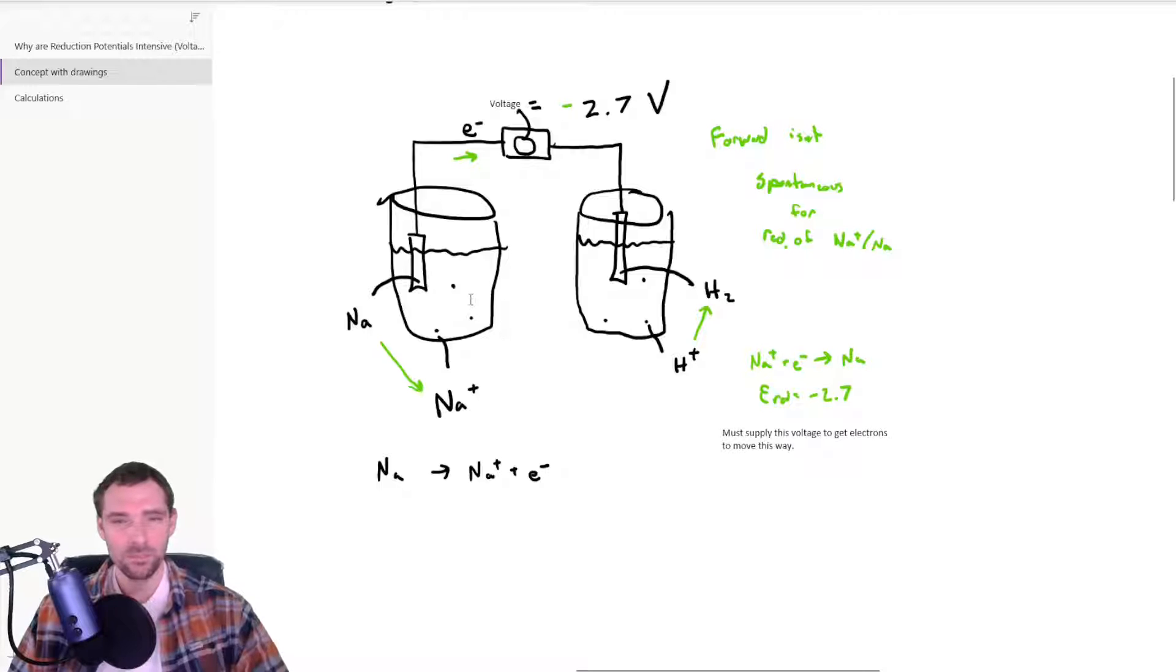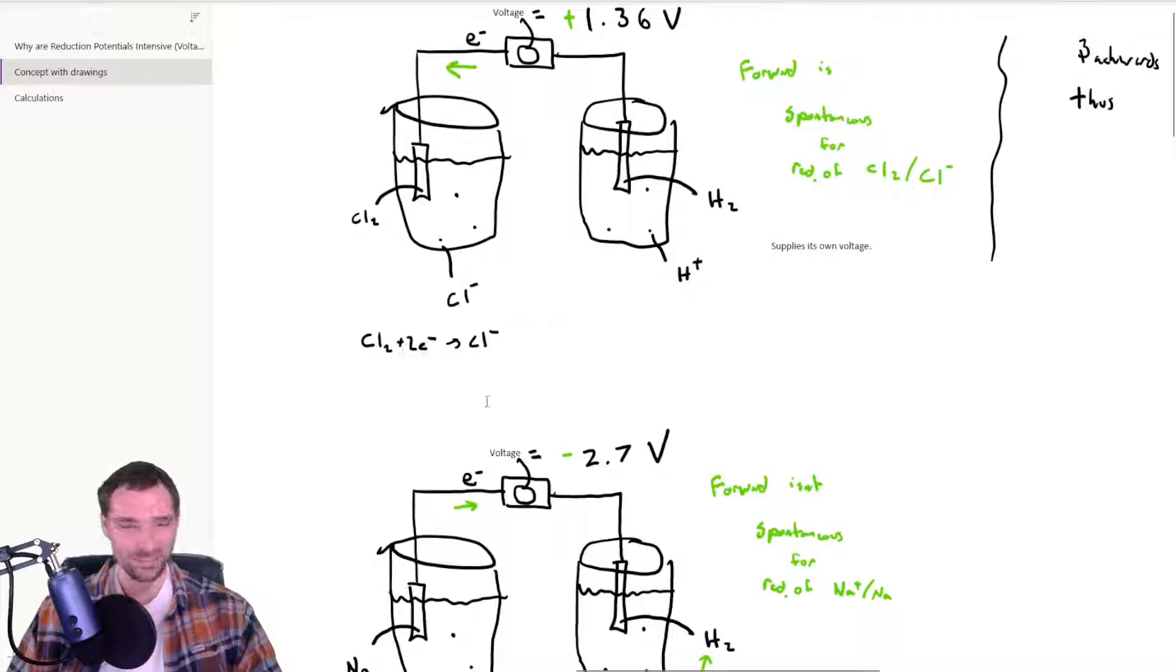But one thing to keep a note is that if you were to change the number, the concentration of these ions in here, it would change the voltage. It's just that's not what we're doing when we're working with standard reduction potentials. It's always one molar and one molar for whatever ions you're talking about. It makes it really nice, like K equilibrium calculations. If you have one molar for everything, it makes the math really, really easy.